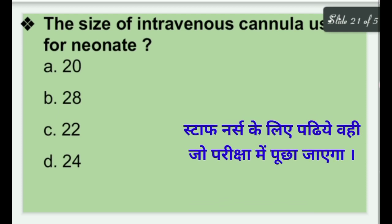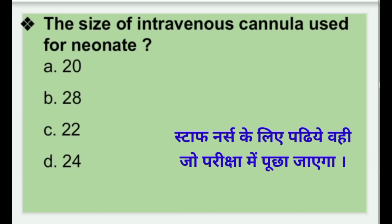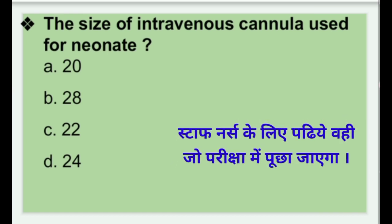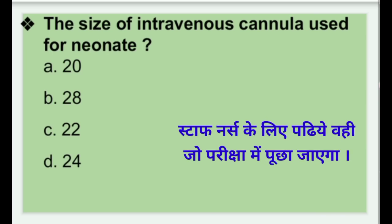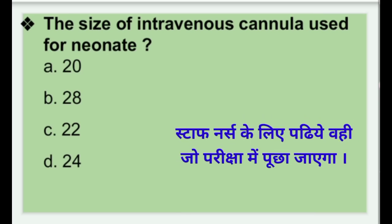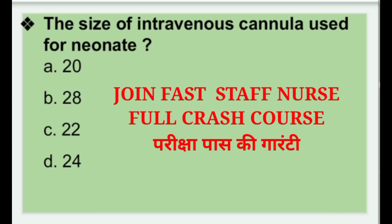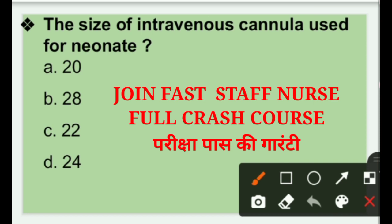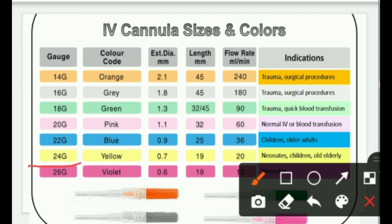Next: The size of intravenous cannula used for a neonate — options are 20, 28, 22, or 24. An intravenous cannula is a thin tube placed inside a vein to provide venous access, to administer medication, drain fluid, or insert a surgical instrument. The right answer is 24. For neonates it is 24G with a yellow color code and a flow rate of 20 ml per minute.